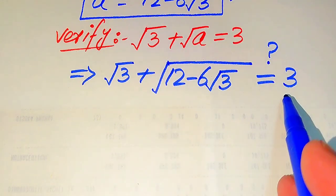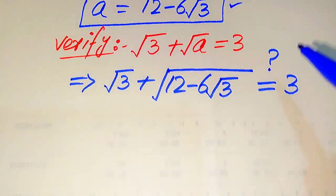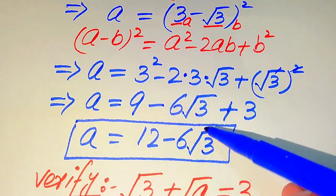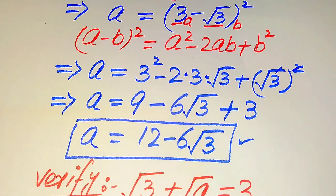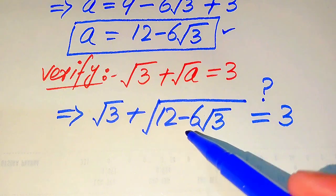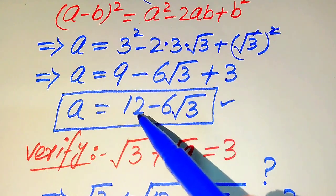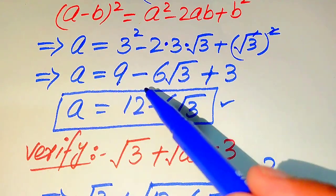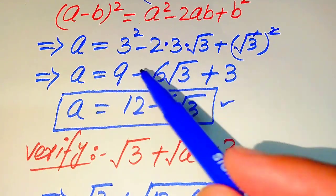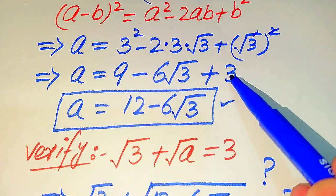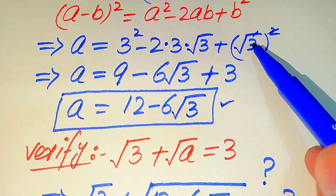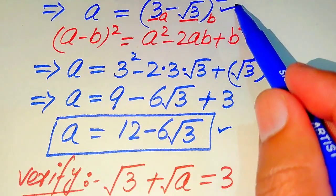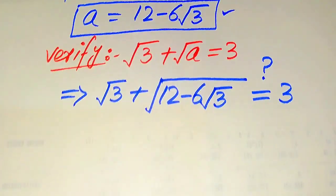We need a little simplification on the left hand side to show it equals 3. We do these steps backward for verification. We write 12 as 9 plus 3, breaking 12 into 9 plus 3. Moving further backward, we write 9 as 3 squared and we write 3 as square root of 3 all squared.